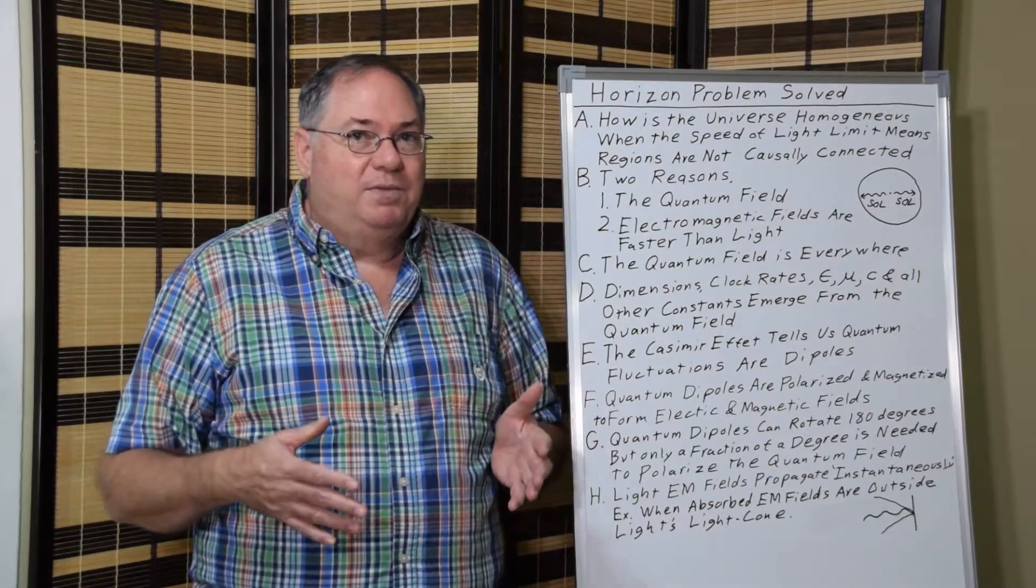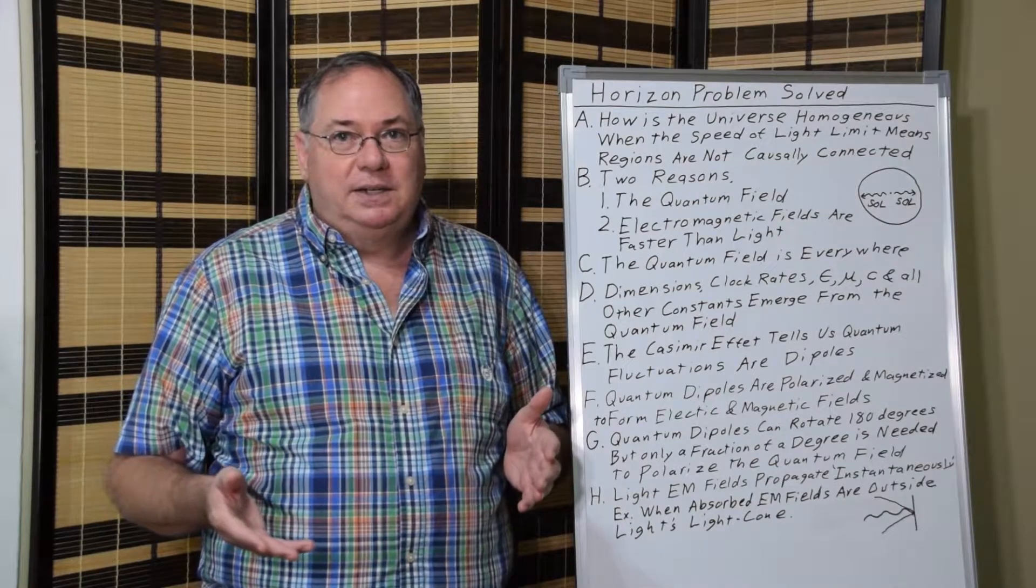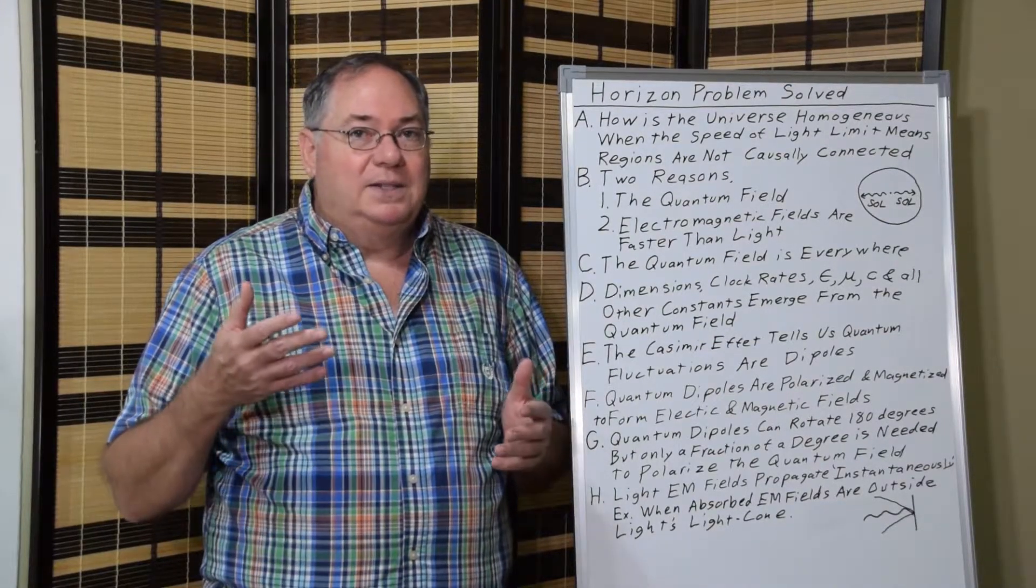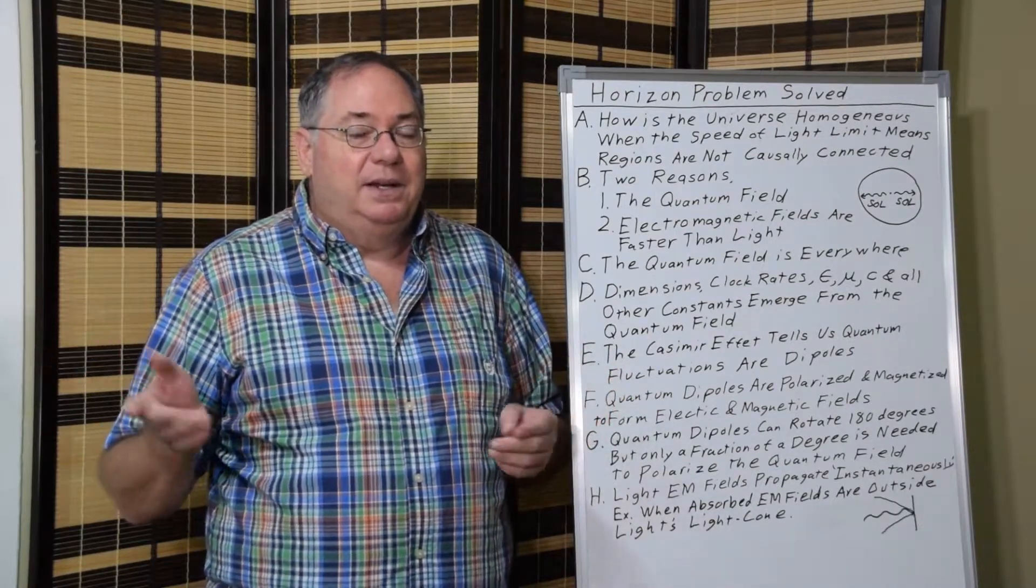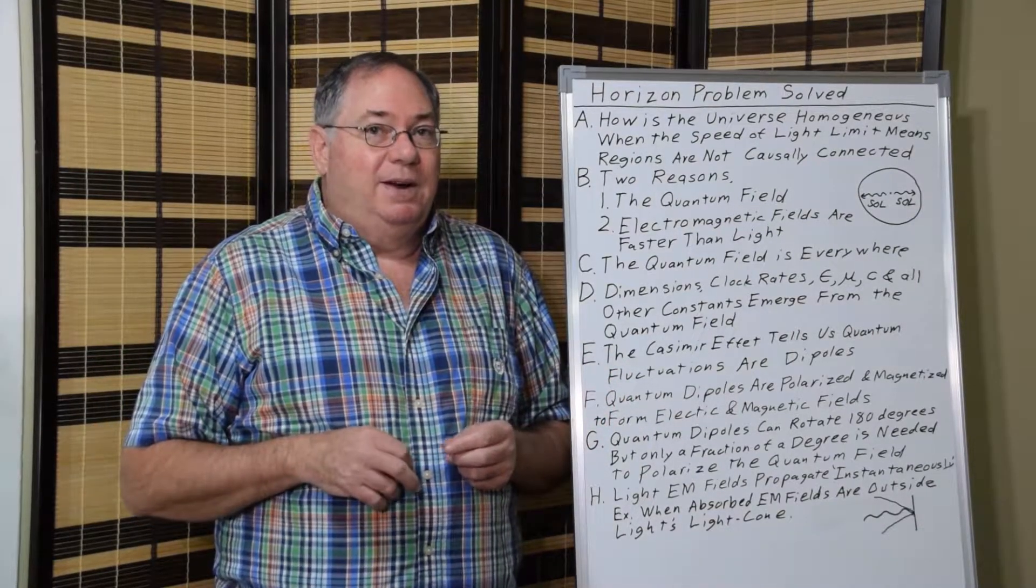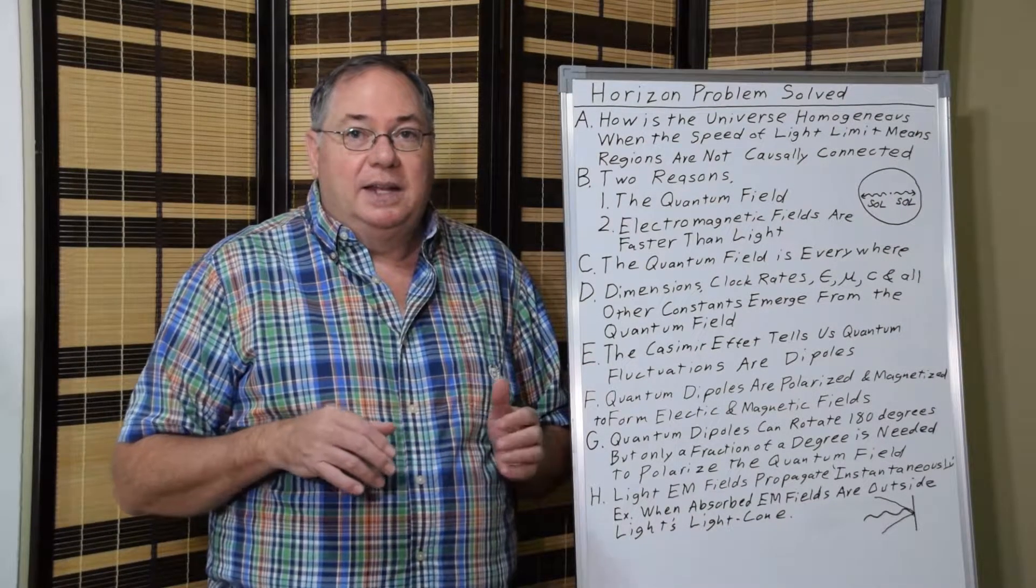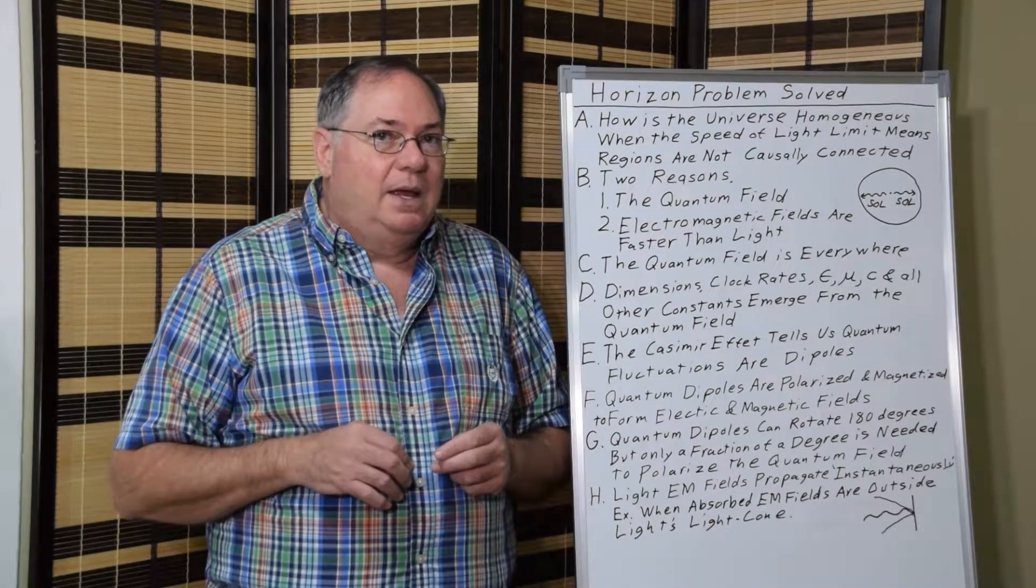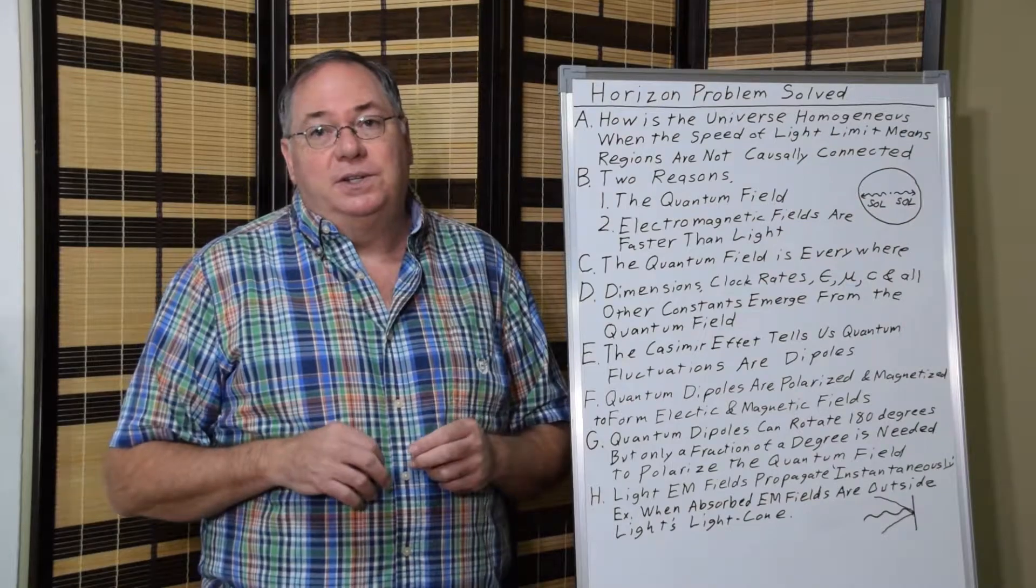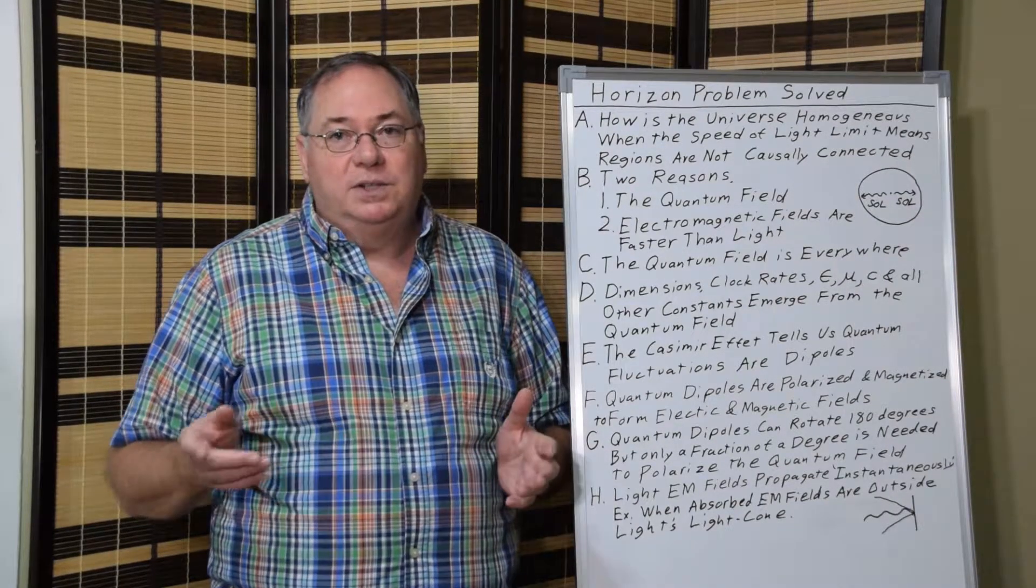And so this is where the problem comes from, how is the universe homogeneous while at the same time we have this speed of light limit issue that relativists are hell-bent on. And they say that there's no causality link. So, there are really two solutions to this problem, two fundamental reasons why the universe is homogeneous.